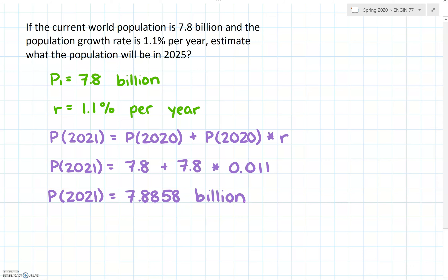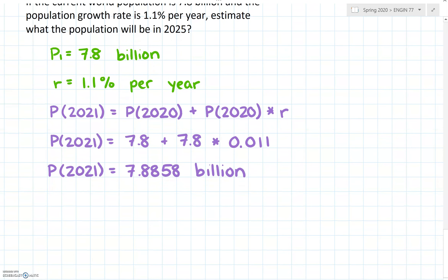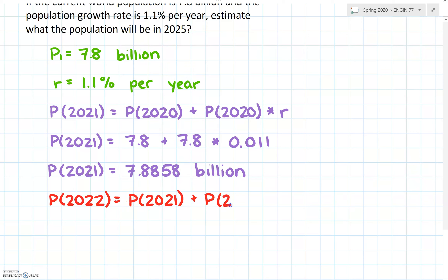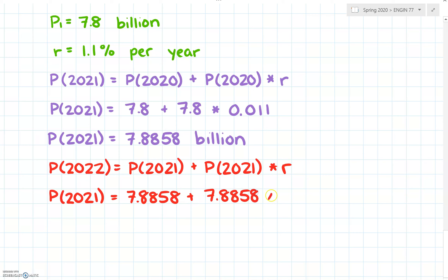We can then use this 2021 information to estimate the population in 2022. That looks like a very similar equation: the population in 2022 equals the population in 2021 plus the population in 2021 times r. Plugging in: 7.8858 plus 7.8858 times 0.011, giving us a population in 2022 of 7.97 billion.